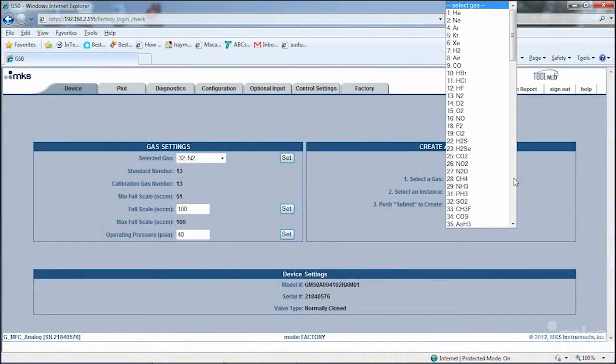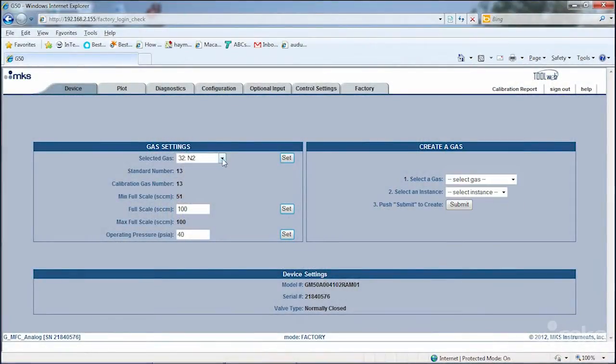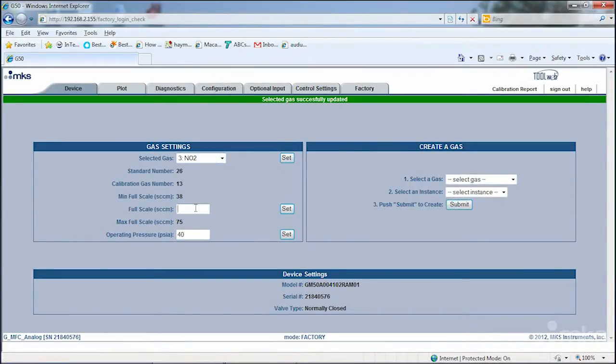Users simply select a gas from a large list of common process gases pre-installed on the MFC. Without a P-Series MFC, a gas change requires either a complex setup procedure or replacement of the MFC.